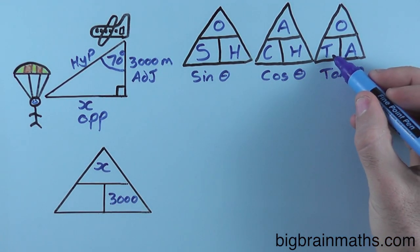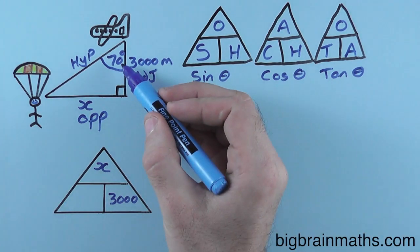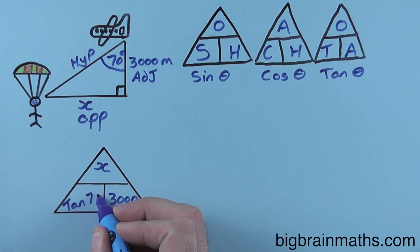In this box, we have tan theta, and remember, theta means angle. Now, in this question, our angle is 70 degrees, so in this box, I write tan 70.